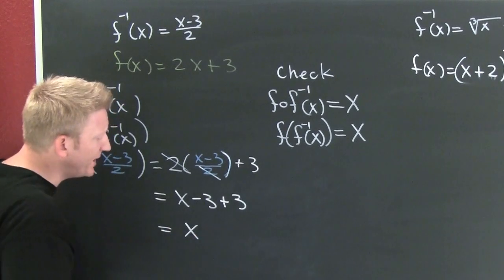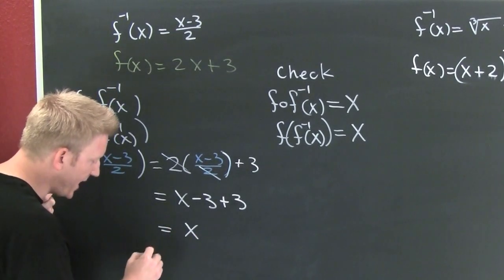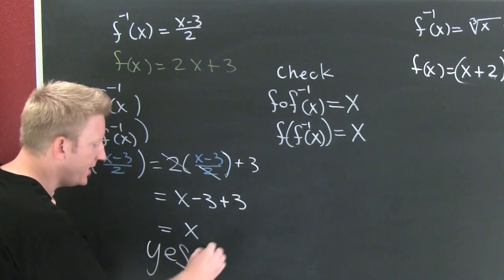And then I have x minus 3 plus 3. And we see, we do get our arguments. So then we can conclude it is an inverse.